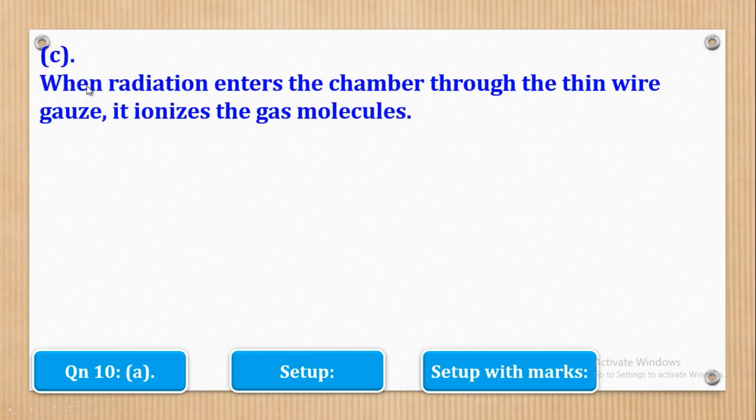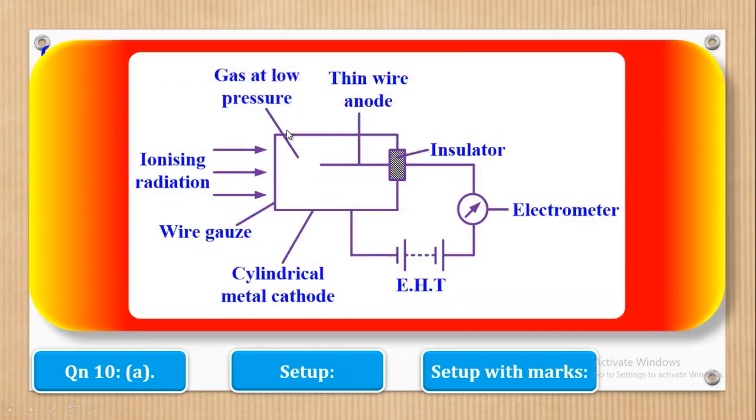So we shall see that when radiation enters the ionization chamber through the thin wire gauge, it ionizes the gas molecules. So remember this is the ionizing radiation. And this space here is filled with gas at low pressure. Now when this ionizing radiation enters through this thin wire gauge, it will ionize the gas molecules splitting it in two. And with that it will form positive and negative ions.